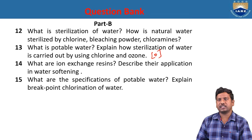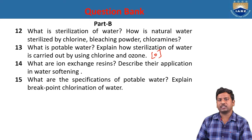What are ion exchange resins? Describe their application in water softening. There are two types of ion exchange resins: cation exchange resins and anion exchange resins. Cation exchange resins have H⁺ ions with the ability to exchange cationic hardness like calcium and magnesium ions. Anion exchange resins replace anionic hardness from chlorides and sulphates. In the water softening method, we use the ion exchange process.